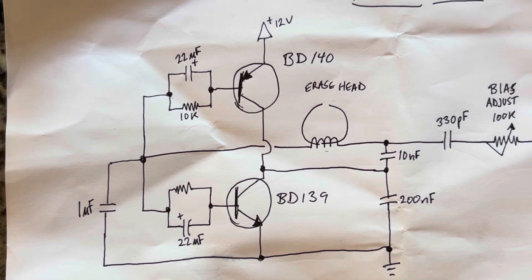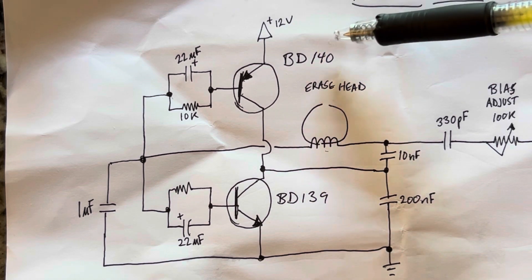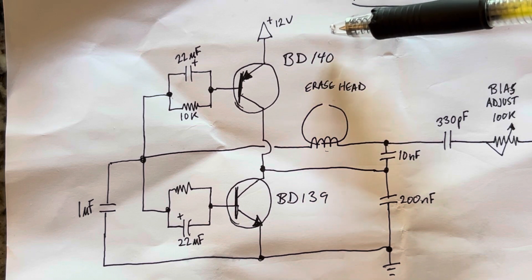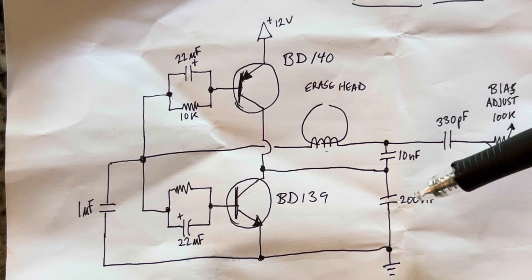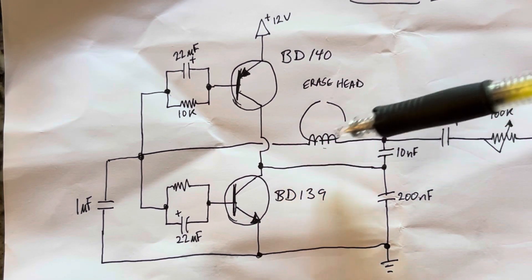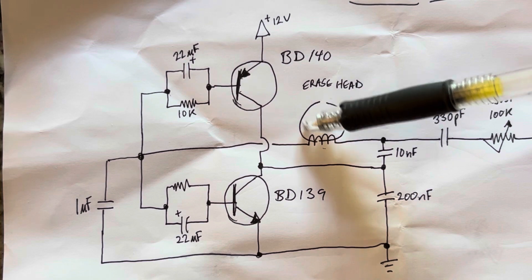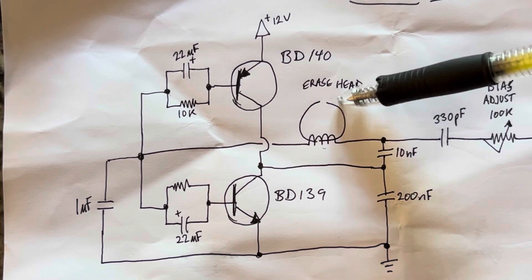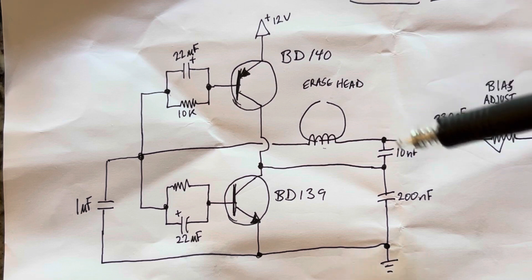Cool dude Clem used this in his video on his tape recorder project. Basically this oscillator — the way it works — the core of it is the erase head of your tape recorder, if it's not a permanent magnet but an actual erase head designed the right way.